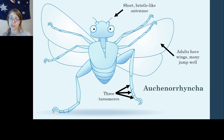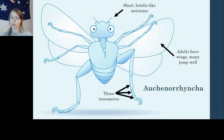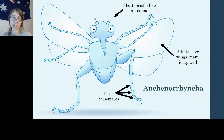Comparing Sternorhyncha to Auchenorrhyncha — the free-living Hemipterans: Auchenorrhynchans have bristle-like antennae, just a tiny hair on each side. Adults almost always have wings and are very mobile — they can jump well and move quickly. In contrast, Sternorhynchans hardly move at all. Some can crawl, very few can actually jump, and by and large they are sedentary — the couch potatoes of Hemipterans. Auchenorrhynchans generally have three tarsomeres rather than two or one.